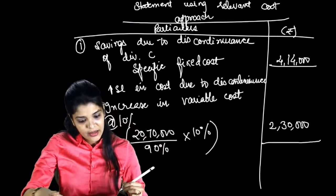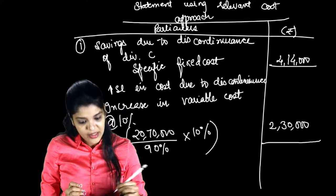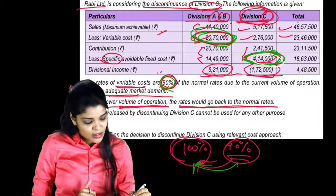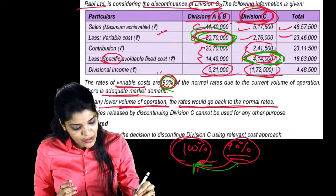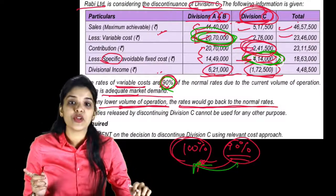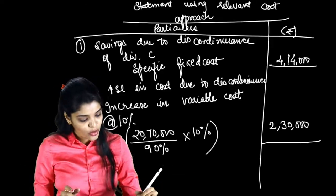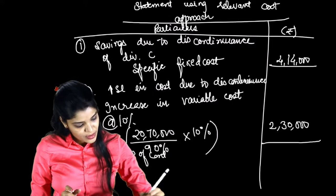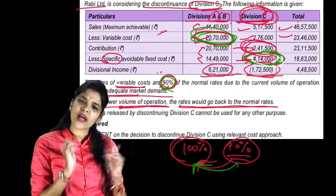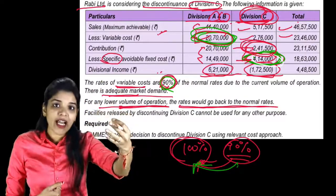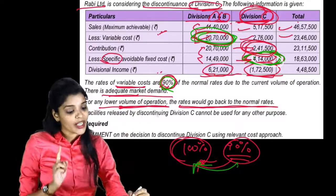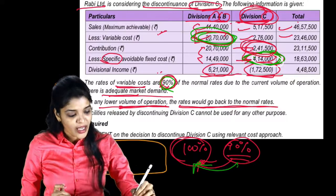Or we can show increase in cost - loss of contribution. Loss of contribution will be our loss. Fixed cost savings is our saving. This loss - this 10% extra variable cost - but we can understand there are two things: one is loss of contribution and the other is our variable cost 10% increase.